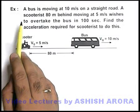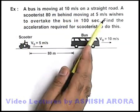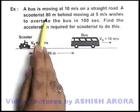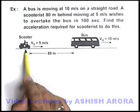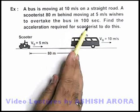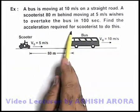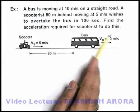In this problem, we are given that a bus is moving at 10 meters per second on a straight road, and a scooter 80 meters behind the bus is moving at 5 meters per second and wishes to overtake the bus in 100 seconds. We are required to find the acceleration required for the scooterist to do this.